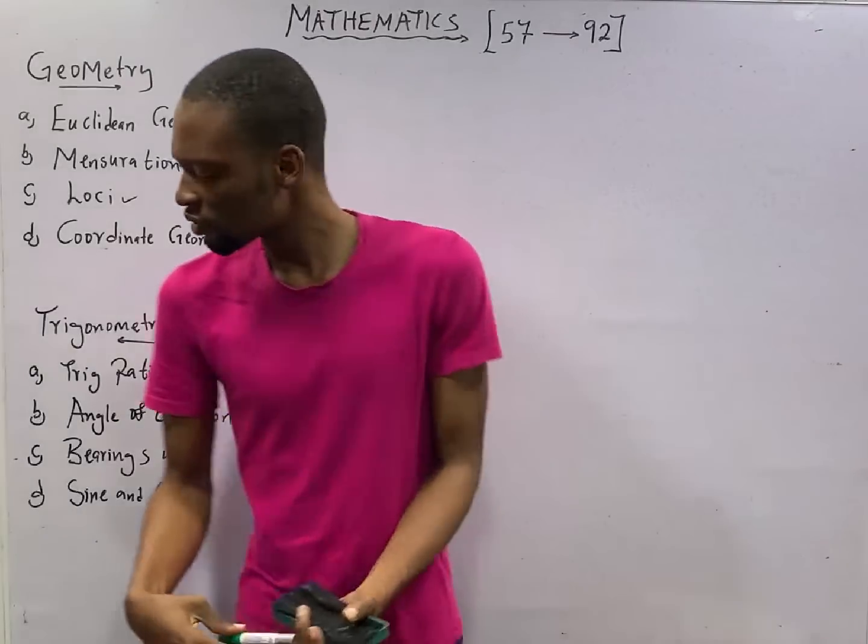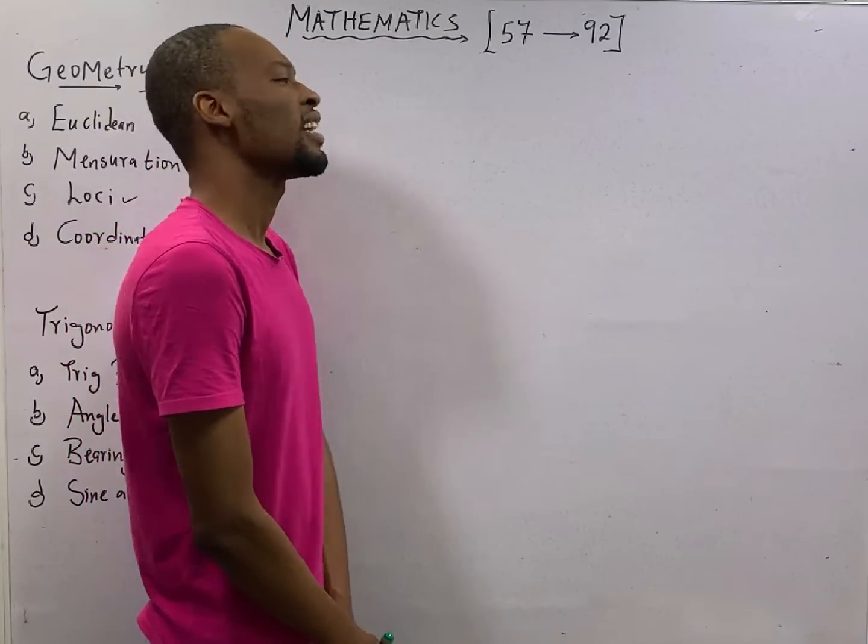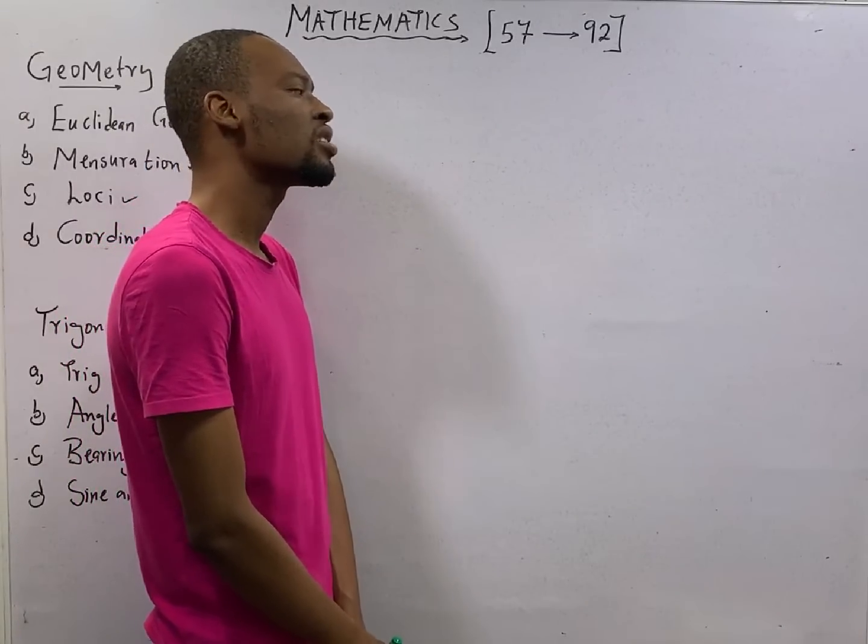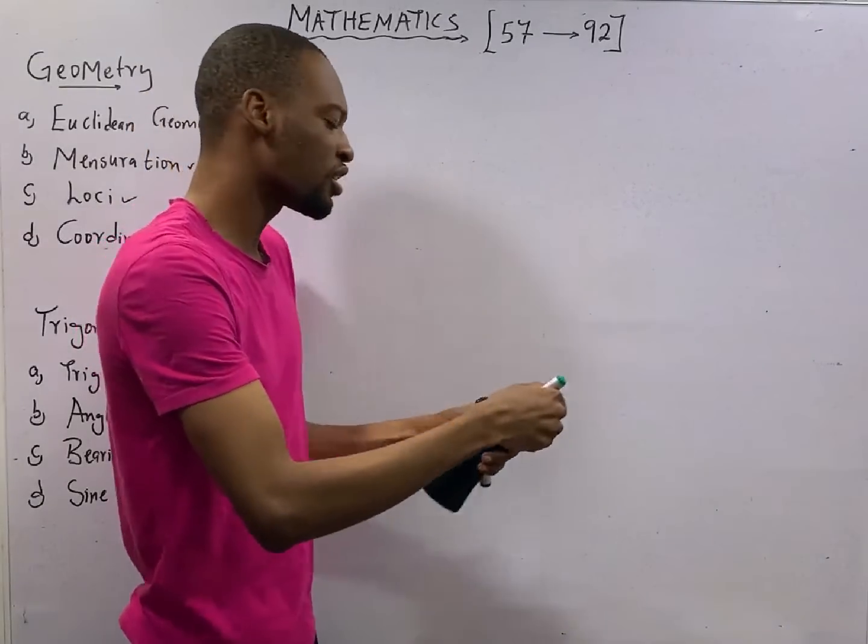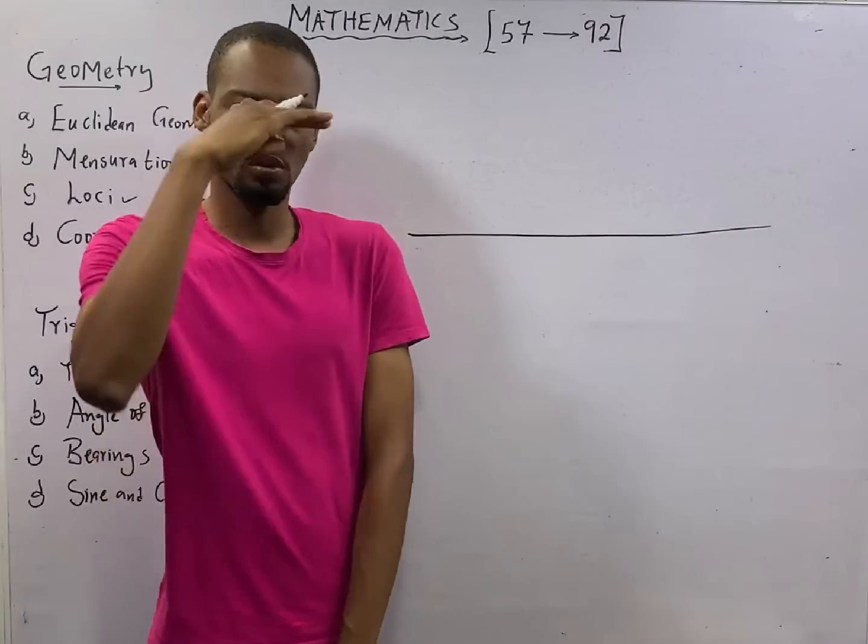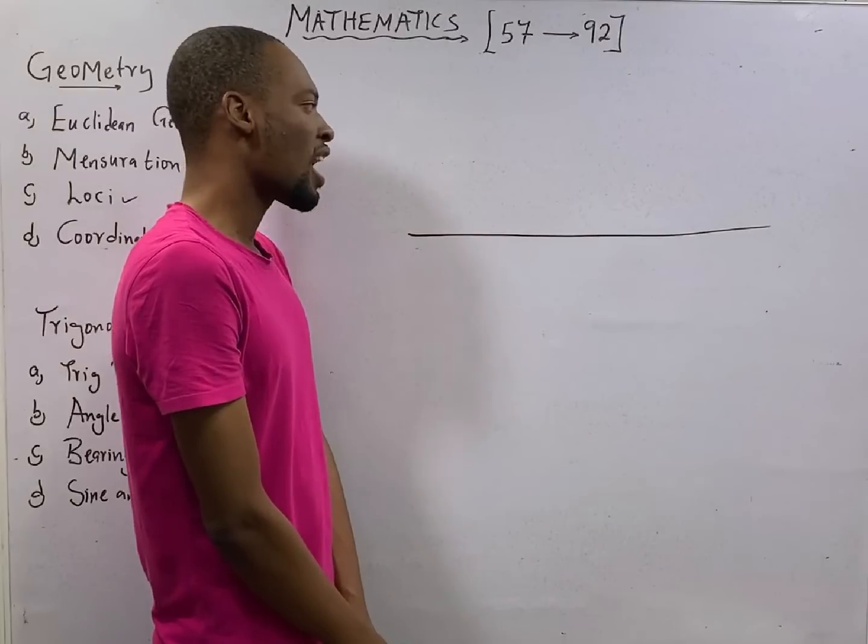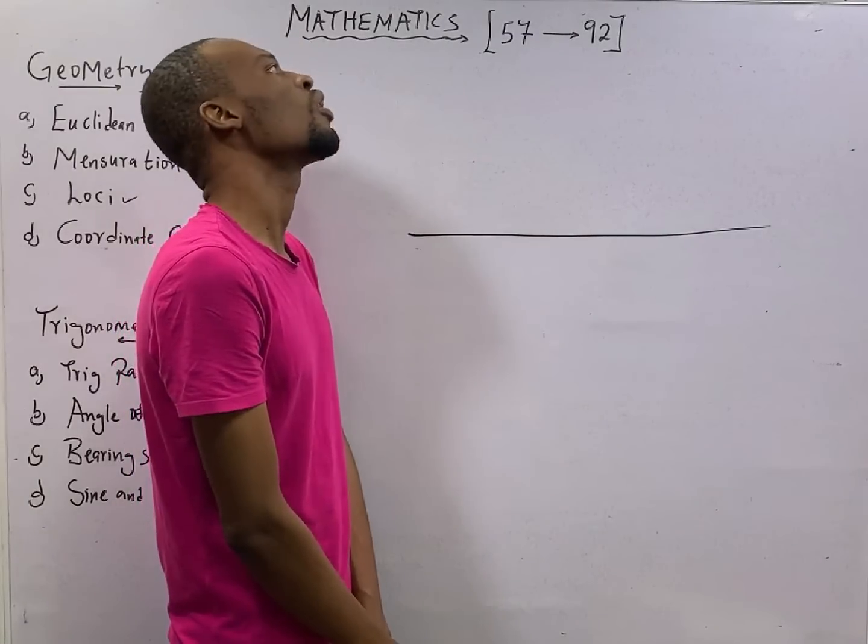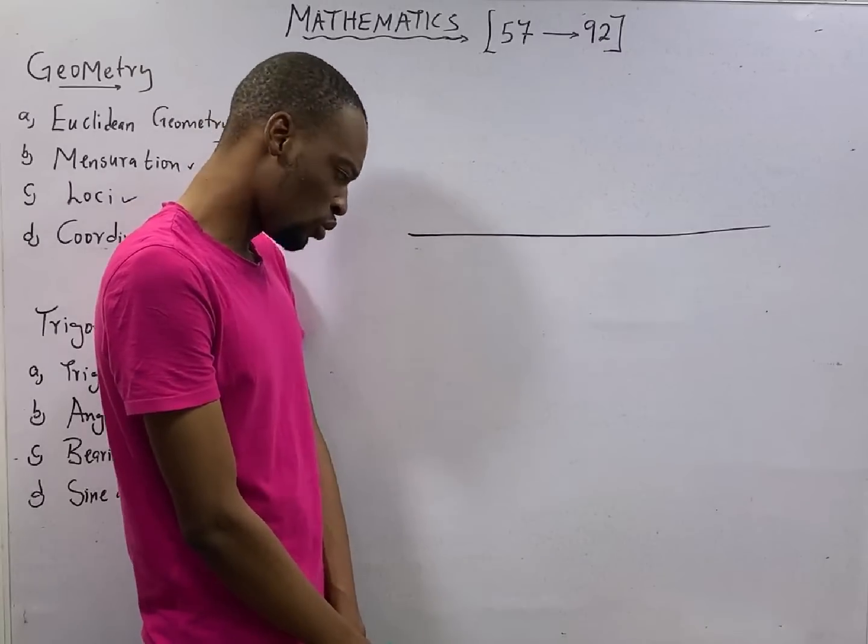Now look at something. If I am standing here, and my head is like this, this is my normal view. So let's call it the horizontal. That is your normal view like this. It is the horizontal. I may decide to look up. I may decide to look down.